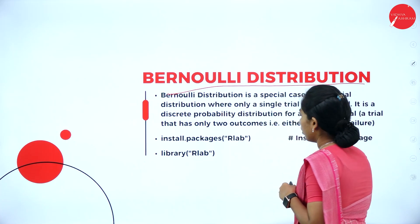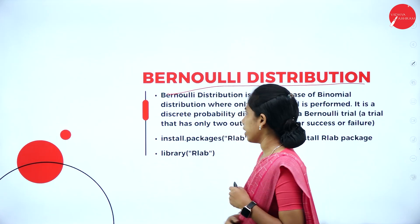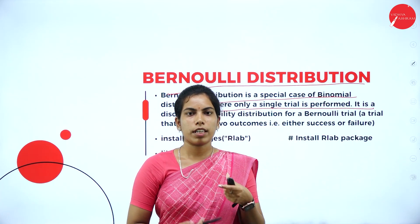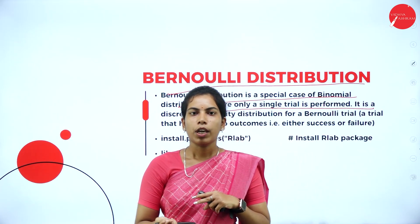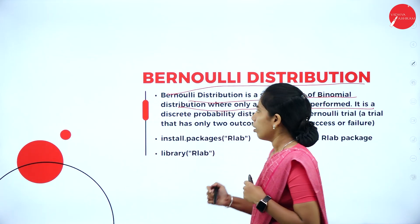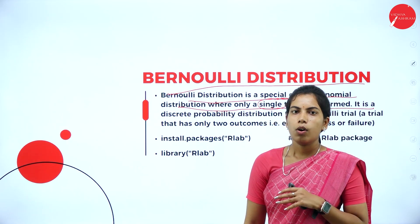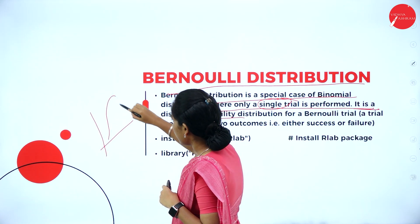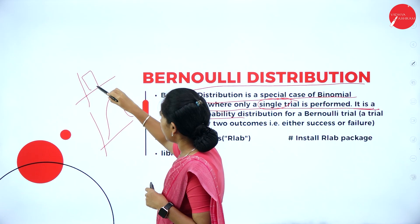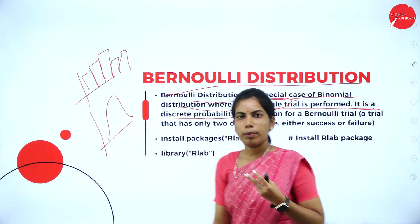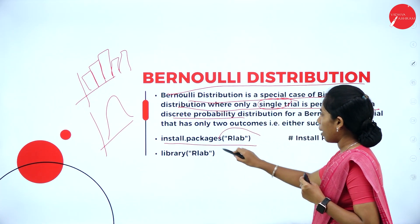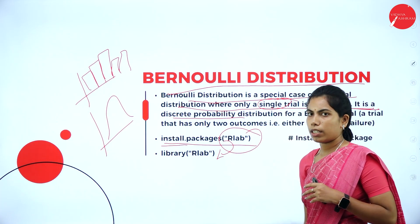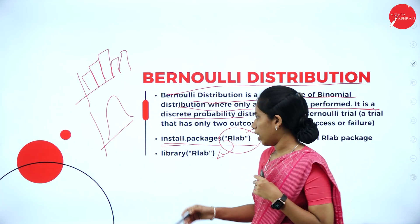Bernoulli distribution is also one of the common probability mass functions. Bernoulli distribution is a special case of binomial distribution where only a single trial is performed. In binomial, 'binom' means two — we check either fail or success. But in Bernoulli, we calculate only a single outcome: either success or failure. It is a discrete probability distribution. For this we need the RLAB package. To install it, call install.packages('rlab'), then load the library.